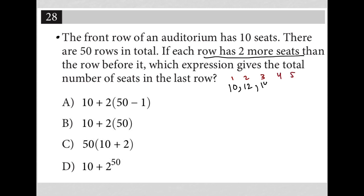So row three would be 14 seats, row four would be 16 seats, and row five would be 18 seats. Now I'm going to make my way to row 50, but I'm going to try to do that in the fastest way possible.